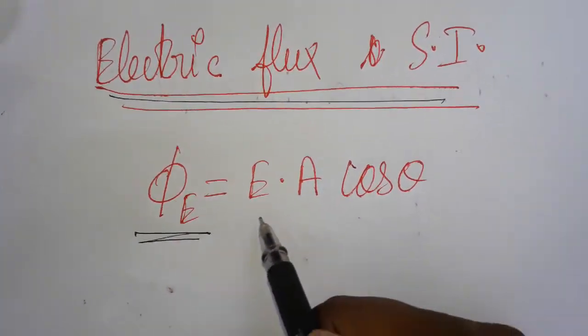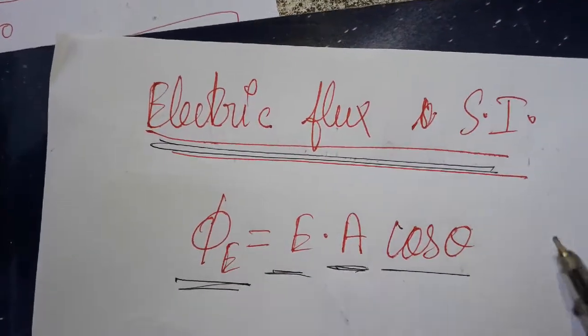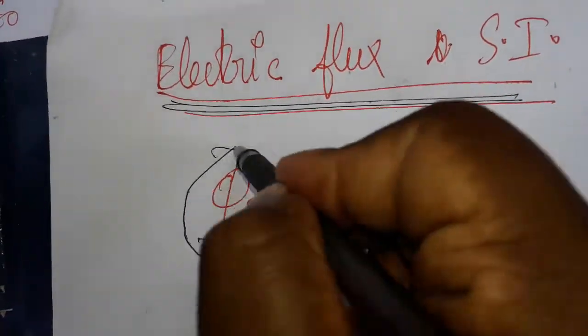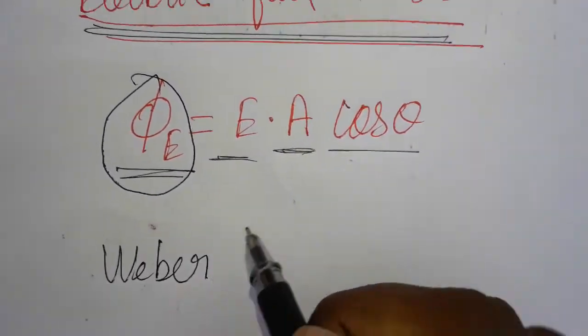Electric flux is equal to electric field into area cos theta. Now we are going to learn about electric flux as a unit. Electric flux as a unit is called a Weber.